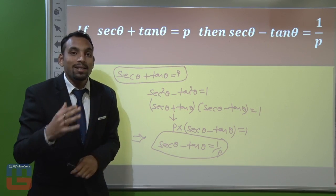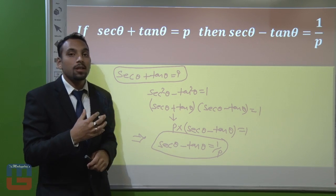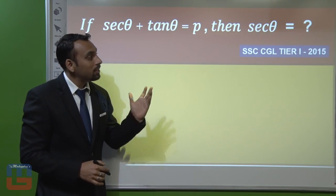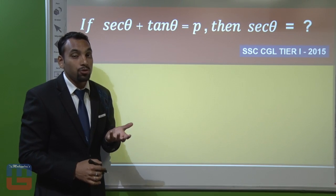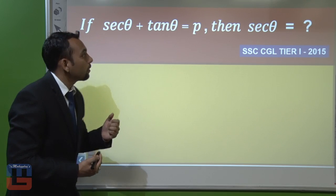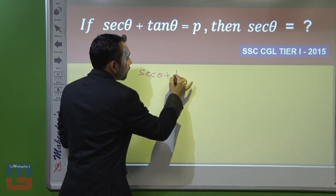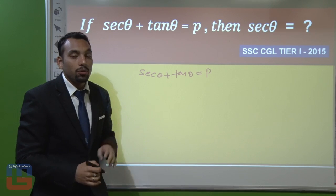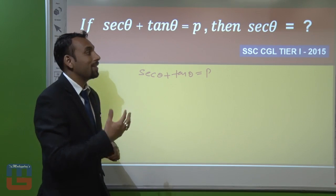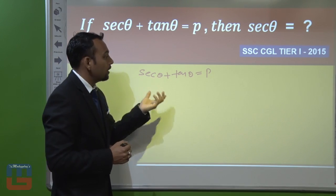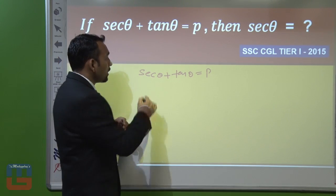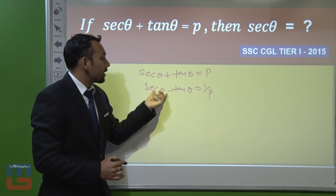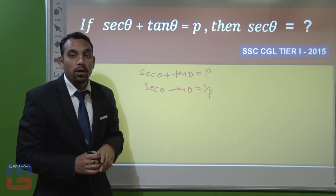So always remember: if sec θ + tan θ = p, then sec θ − tan θ = 1/p. Now let us see how questions come from this. This question was asked in SSC CGL Tier 1, 2015 — a very important question. We are given sec θ + tan θ = p, and the question asks: what is the value of sec θ? We know sec θ − tan θ = 1/p from our earlier relation.